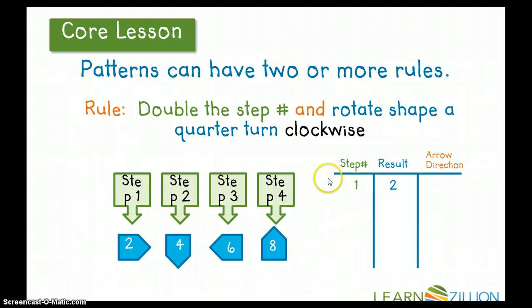So step 1, I doubled this number. I got 2, and my direction was pointing to the right. Step 2, I doubled my number. I got 4. My arrow was pointing down. Step 3, I doubled my number, became 6, and my arrow is pointing to the left. Step 4, I doubled my number and got an 8, and my arrow is now pointing up. Step 5, I doubled my number and got 10, and take a look.